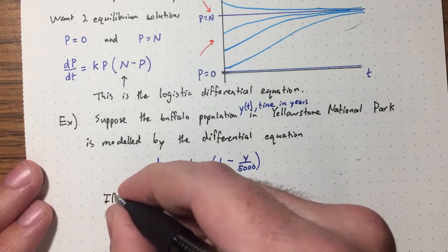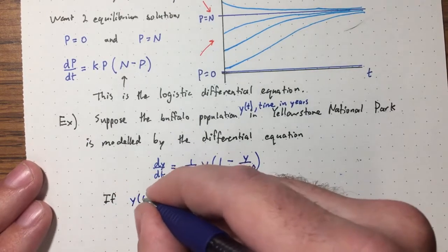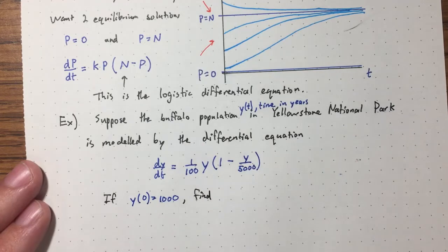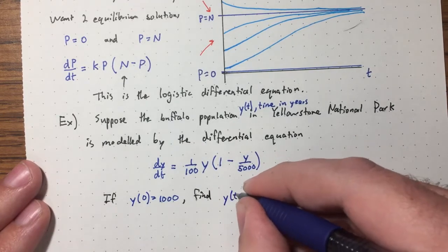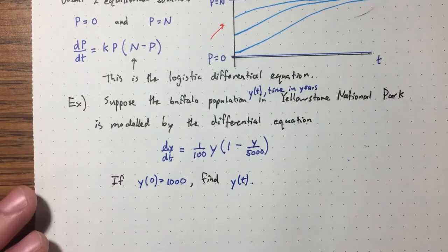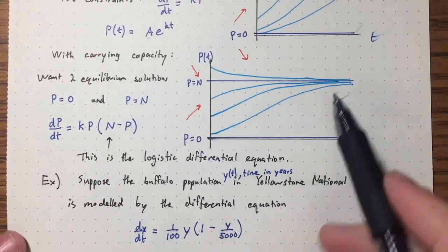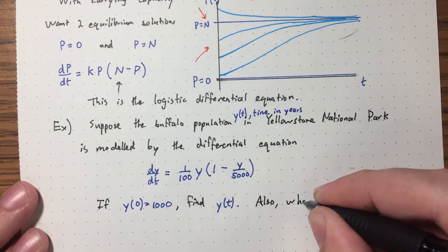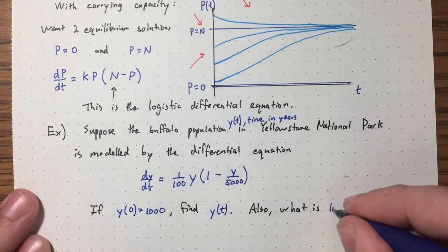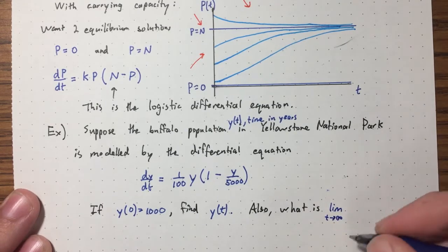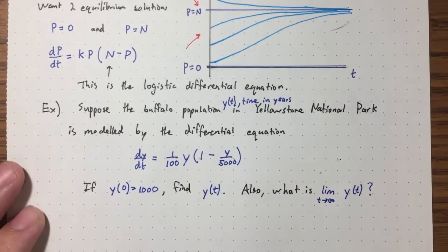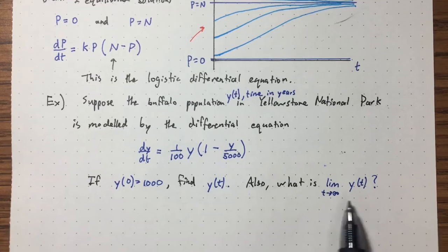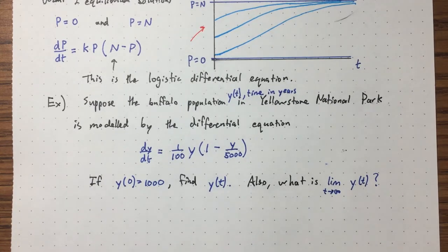I want to ask two questions. First, if the initial population is 1000, find an explicit function y(t). Second, what is the limit as t goes to infinity — how many buffalo will there be in the long run? It turns out the second question is easier, because we can use equilibrium analysis. This doesn't look exactly like the logistic equation I wrote, but it's another common form with (1 − y/N), where N is the carrying capacity.